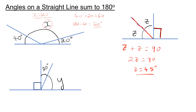Finally, we have 90 degrees, 30 degrees, and Y, which has got to add to 90 degrees. So I can say Y plus 30 equals 90, meaning Y needs to be 70 degrees.